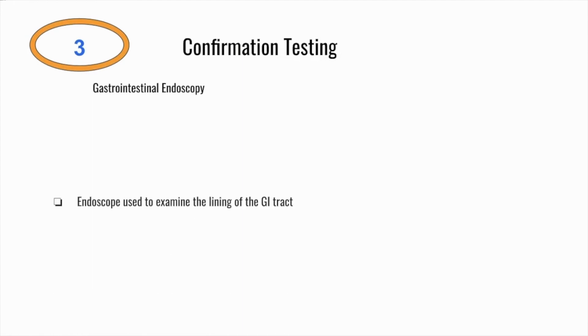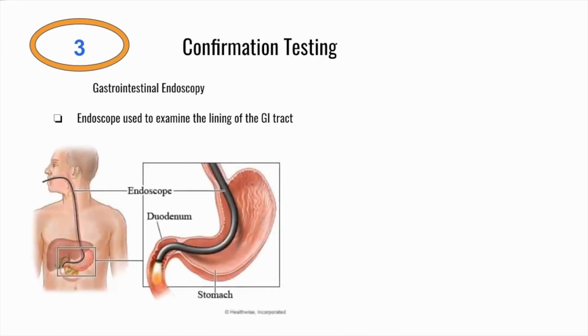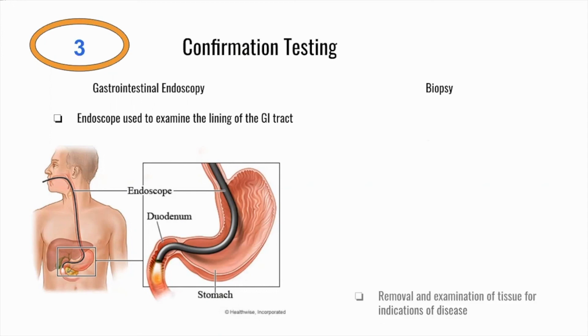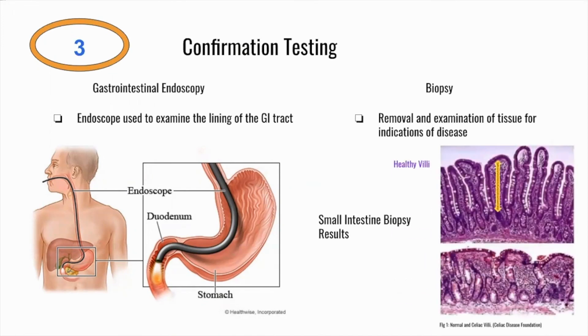To confirm the suspected diagnosis, the state of the intestinal lining must be examined via a gastrointestinal endoscopy. In this procedure, an endoscope — a long flexible tube equipped with a camera — is inserted into the mouth and down the gastrointestinal tract until it reaches the first portion of the small intestine called the duodenum. Doctors then pass a special instrument through the endoscope to take a small piece of tissue called a biopsy from the duodenum. A pathologist analyzes the tissue sample under a microscope, looking for either healthy long villi or flattened damaged villi consistent with celiac disease. When multiple biopsies show consistently abnormal results, a doctor can confidently diagnose the patient with celiac disease.